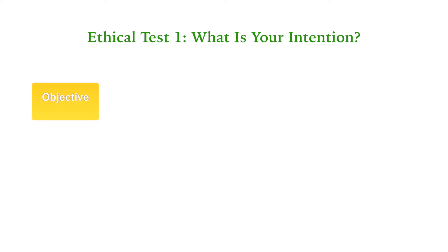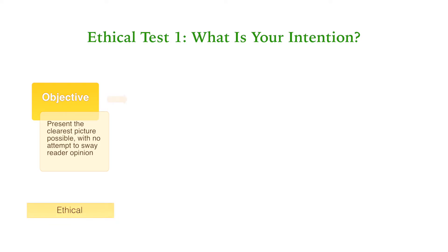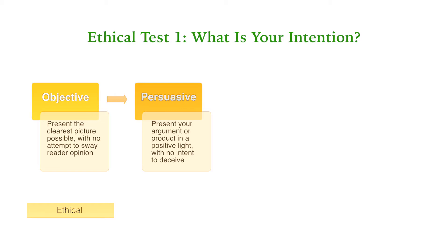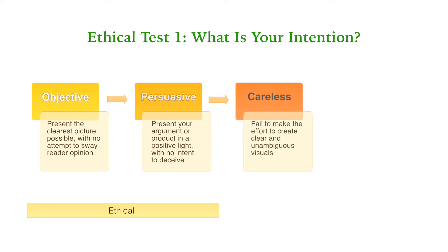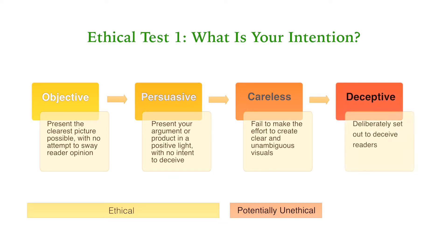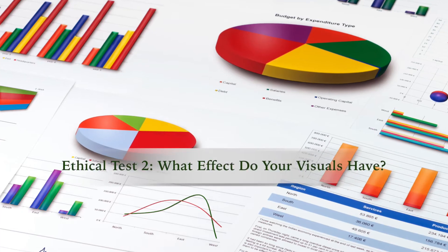The first ethical test involves the intent of your visuals. You can think of intention at four levels. If your intent is to be completely objective, you present your information in visual form with no attempt to persuade audiences to reach a particular conclusion. If your intent is to be persuasive, you can make a compelling and positive case for your argument, proposal, or product and still do so ethically, if you give audiences all the information they need to make an informed decision. If you don't make the effort to create clear and unambiguous visuals that won't mislead the audience, this could be viewed as unethical intent. And lastly, if your intent is to deceive, the visuals are clearly unethical — a choice that responsible business professionals never make.